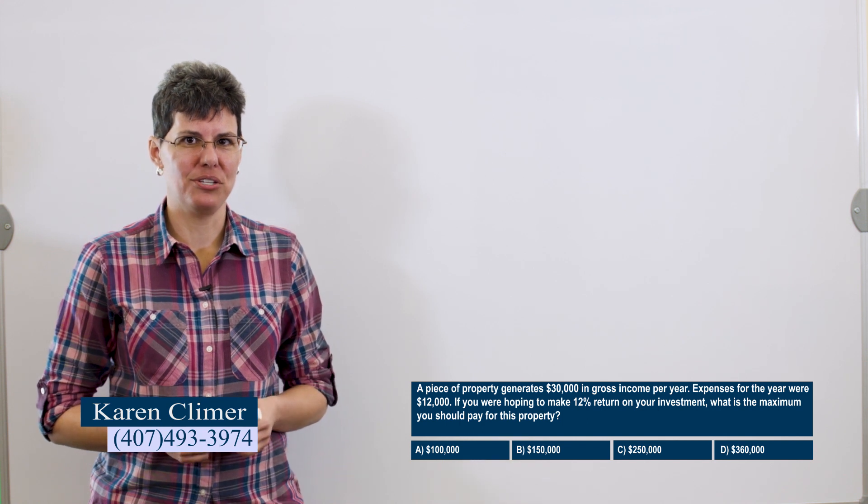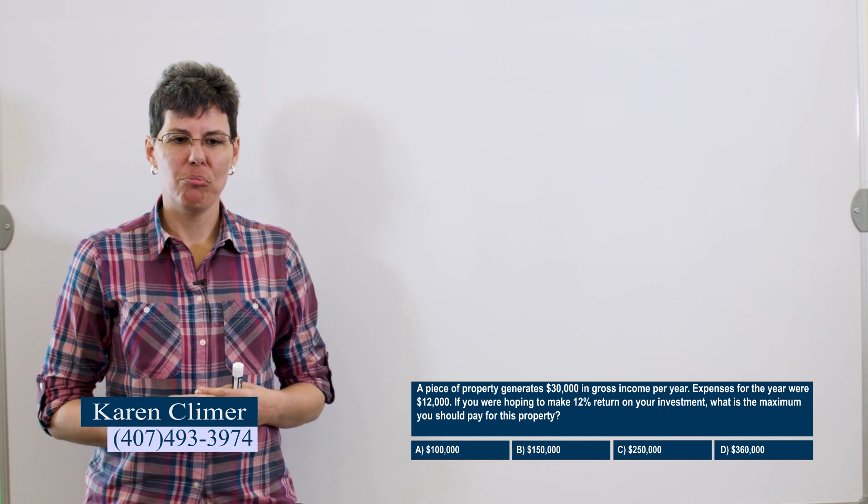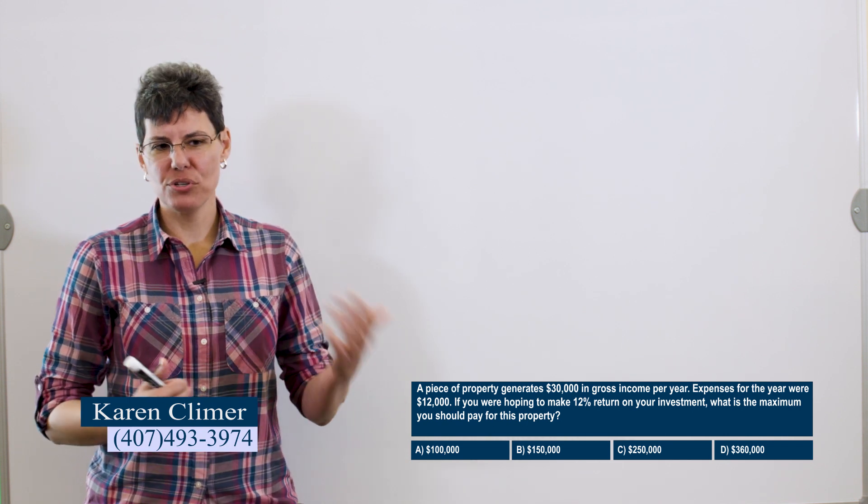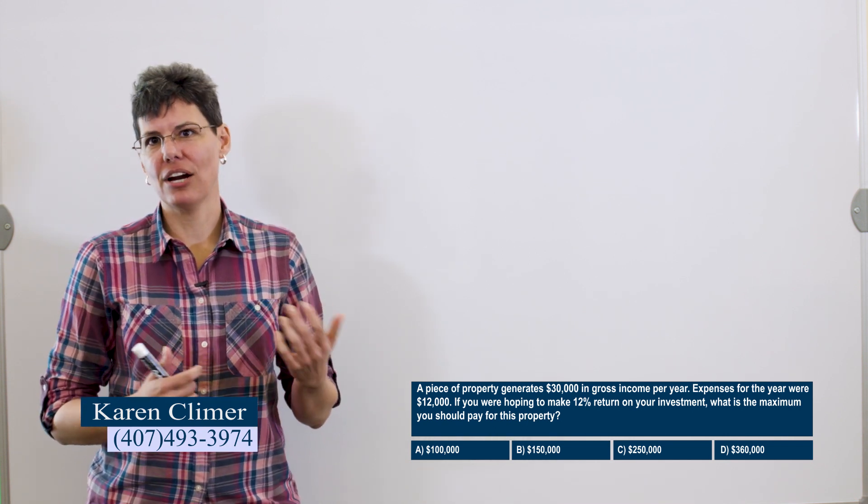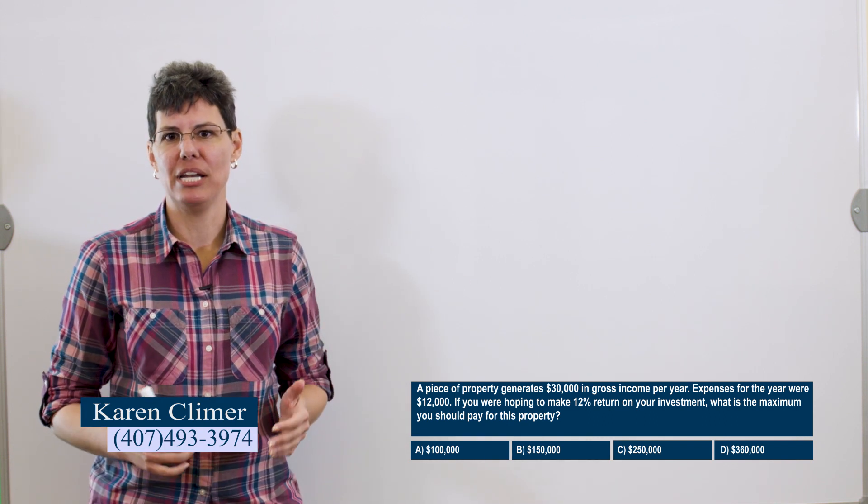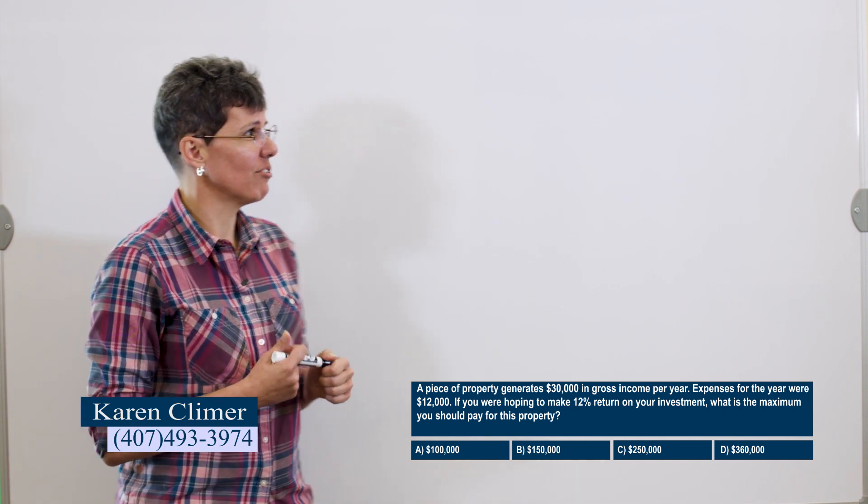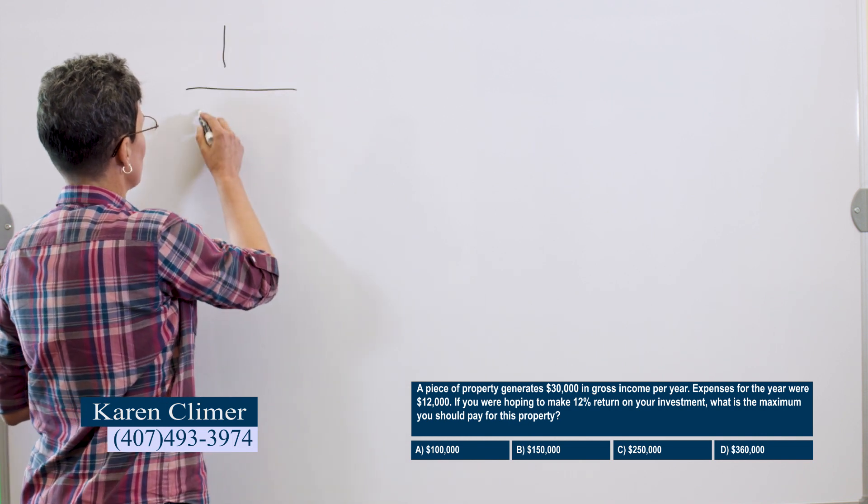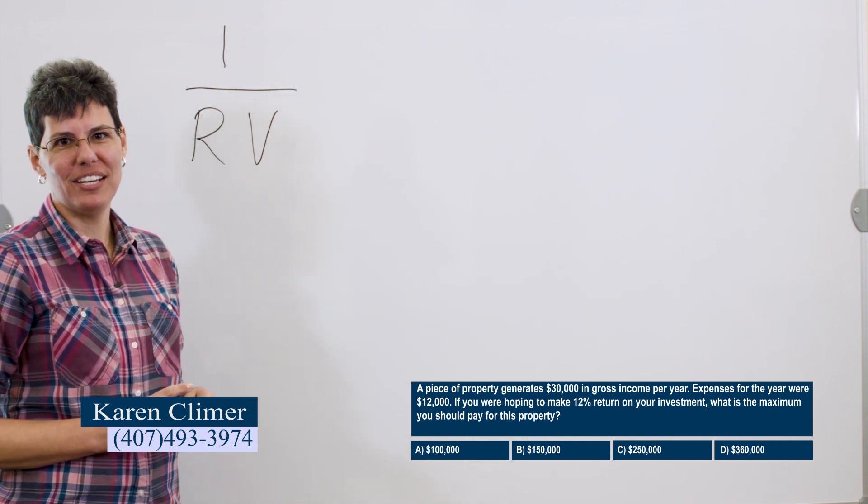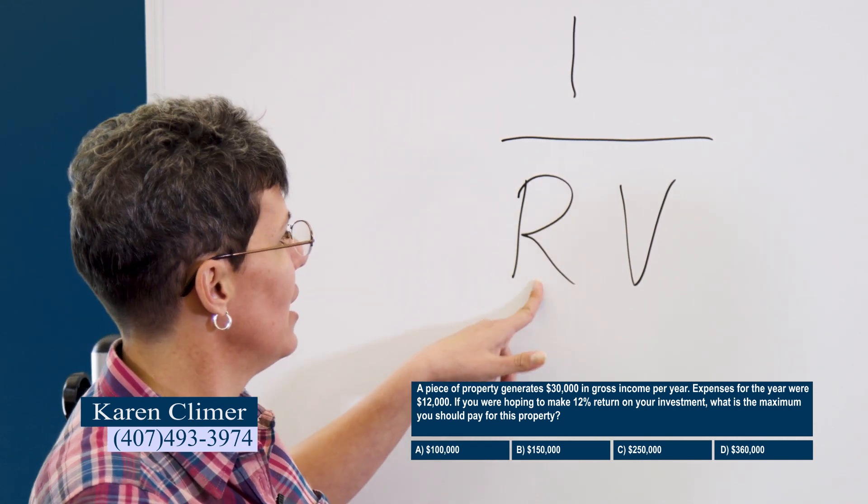This uses the income capitalization approach or the income approach. This assumes that people buy income property because they want the income. The person buying the income property doesn't care how pretty the building is or how many rooms or bathrooms. He just wants to know how much money it makes and that's what determines the price. So the formula for this is I over RV. You can think of yourself standing on top of an RV. I over RV. This is income, rate, and value.